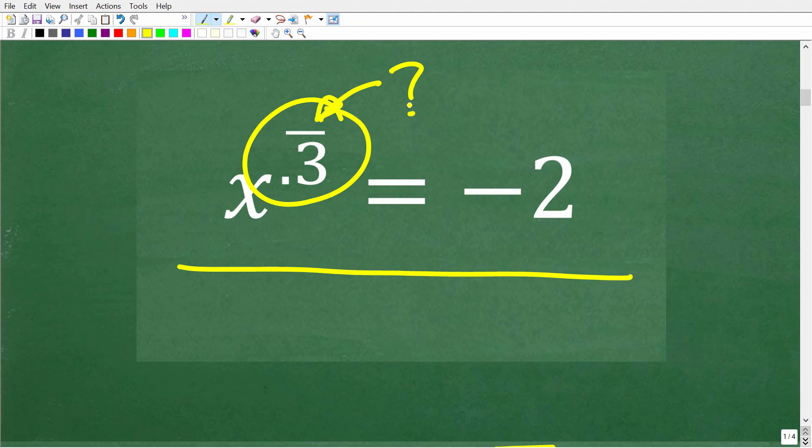Well, if you don't know what this means, you're going to have a tough time solving this equation. So we have x to the 0.3 with this bar over it is equal to negative 2. All right, so let's go ahead and talk about what this little bar means over this 0.3.